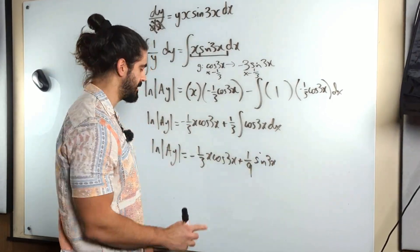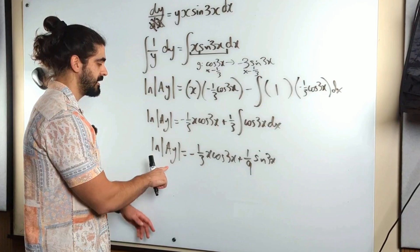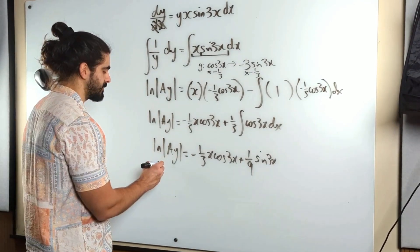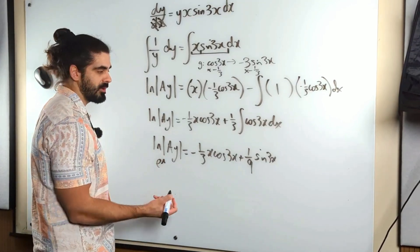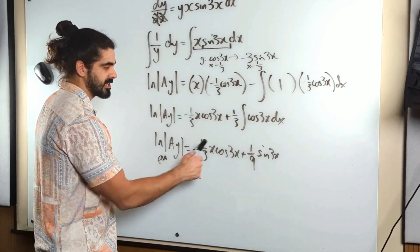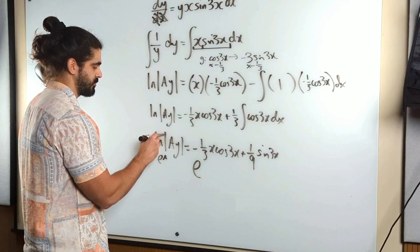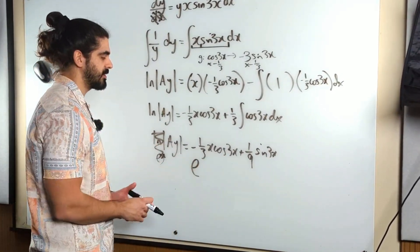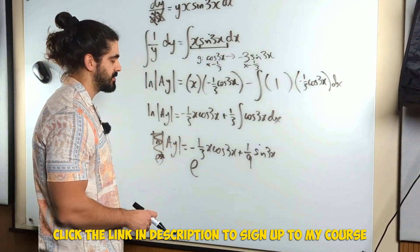And that's it. We don't need to write plus c there because there's my constant of integration. The next thing we're going to do is rearrange for y. We're going to do e to the power of both sides. It's just e to the power of all of this, and then this will go. So we have ay is e to the power of all of this. The next thing we do is just divide both sides by a.